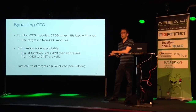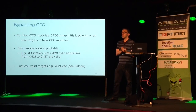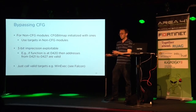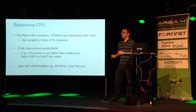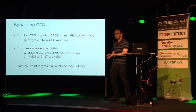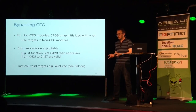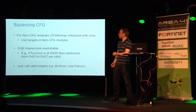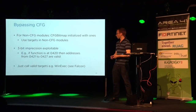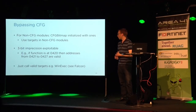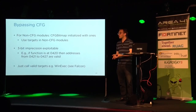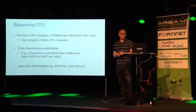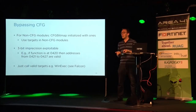Legacy modules have the CFG bitmap initialized to one, so you're allowed to jump and call anywhere in them. Another problem with CFG is imprecision — there's a trade-off between memory consumption and precision. If CFG allows a function at address 0x420 as a valid call target, the implementation actually allows seven additional adjacent addresses to be called or jumped to. So there's some imprecision. Another bypass is simply calling critical functions like WinExec — they're CFG-protected, but you're still allowed to call them.